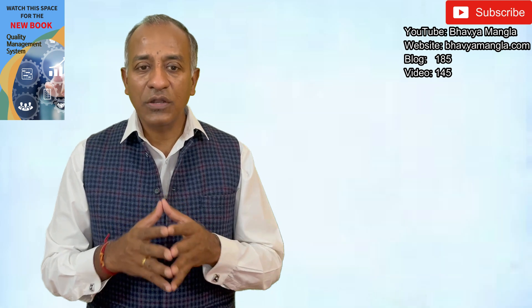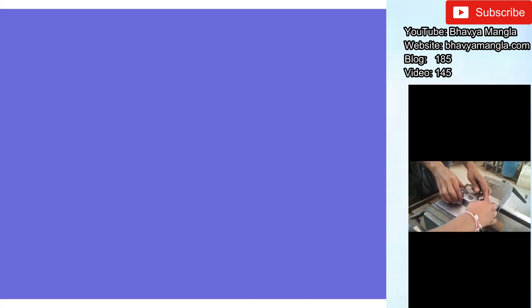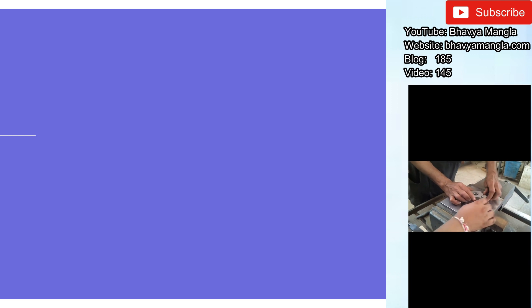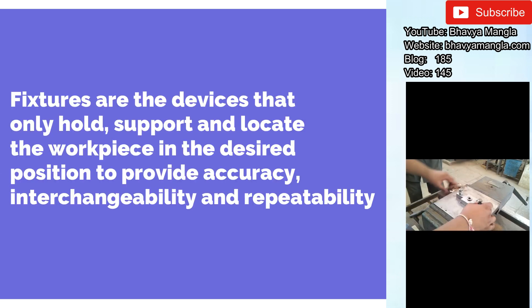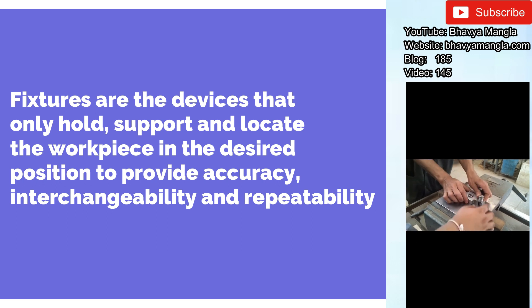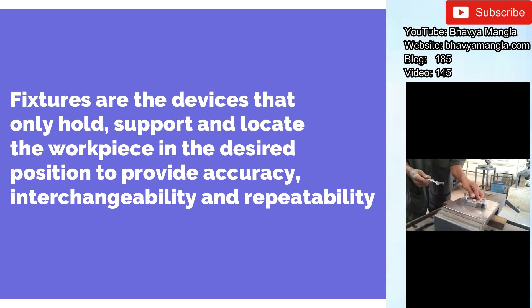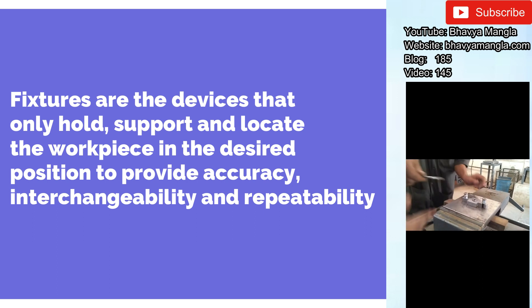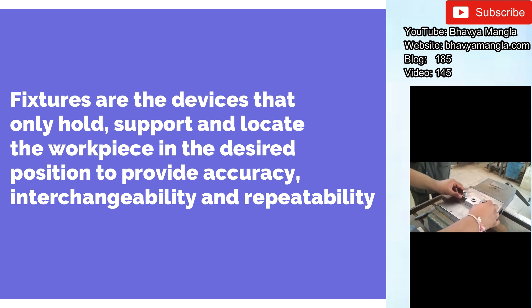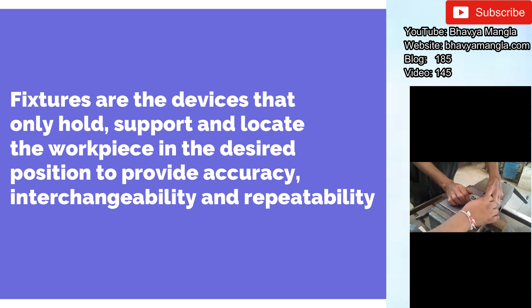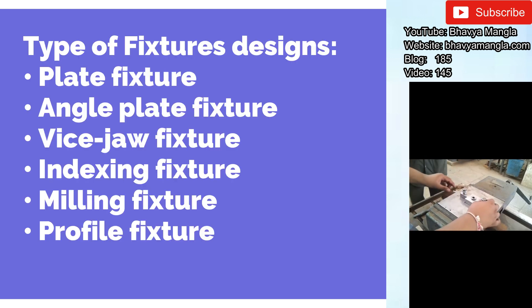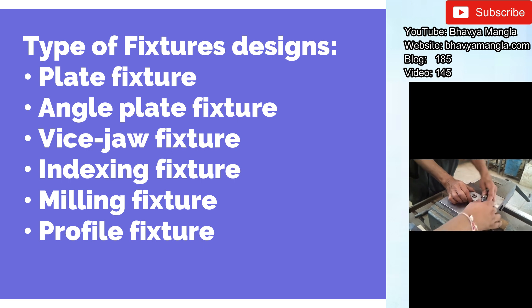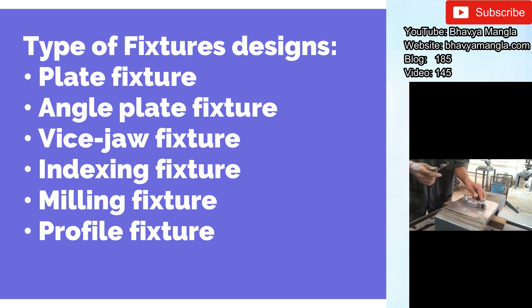When we talk about a fixture, we are primarily talking about a device which can hold, support, and locate the workpiece in the desired position to provide accuracy, interchangeability, and repeatability. Some key examples of fixtures include a plate fixture, an angle plate fixture, a vise jaw fixture, an indexing fixture, and many more.